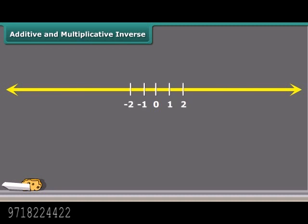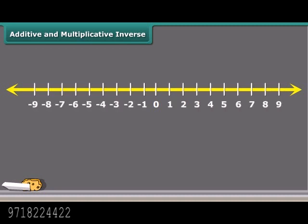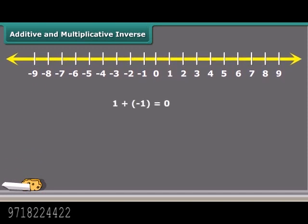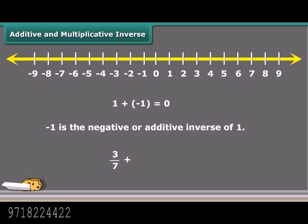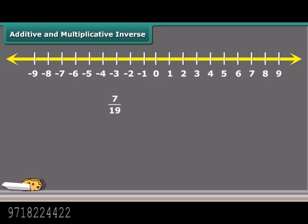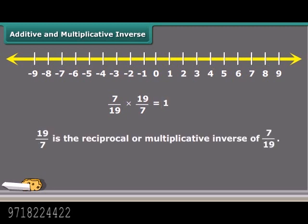You may have come across negative numbers. Is minus 1 the negative of 1? Yes, because 1 plus minus 1 equals 0. So we say that minus 1 is the negative, or additive inverse, of 1. Likewise, for any rational number — say 3 by 7 — minus 3 by 7 will be its additive inverse. By which rational number would we multiply 7 by 19 to get a product of 1? Obviously it's 19 by 7. So 19 by 7 is the reciprocal, or multiplicative inverse, of 7 by 19.